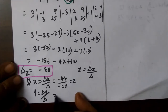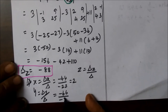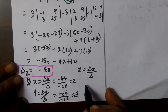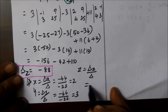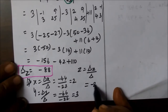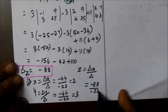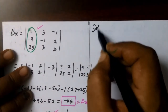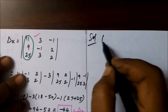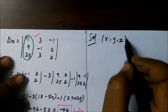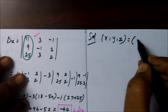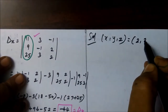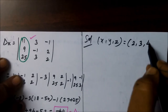Then, next one: minus 66 by minus 22 is equal to 3. Then, this one is minus 88 by minus 22 is equal to 4. Therefore, the solution is x, y, z equals 2, 3, 4.